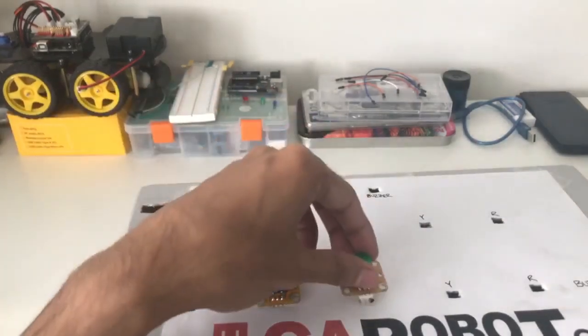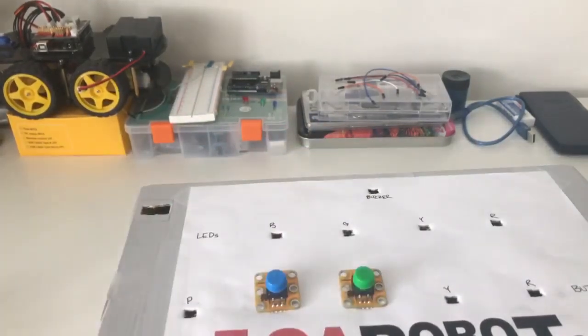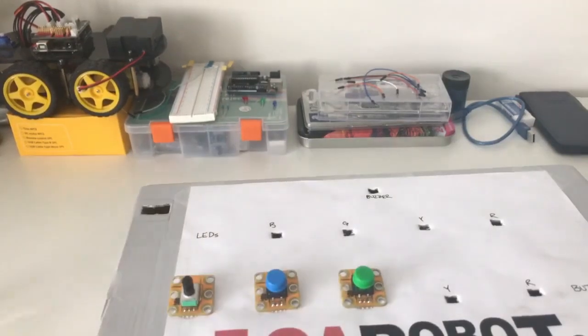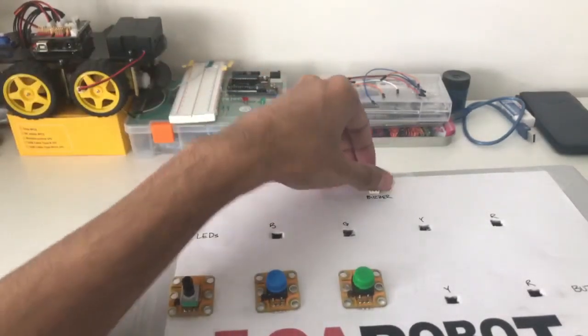Repeat the following with the other buttons, your potentiometer, and your buzzer. Then we can move on to the next step.